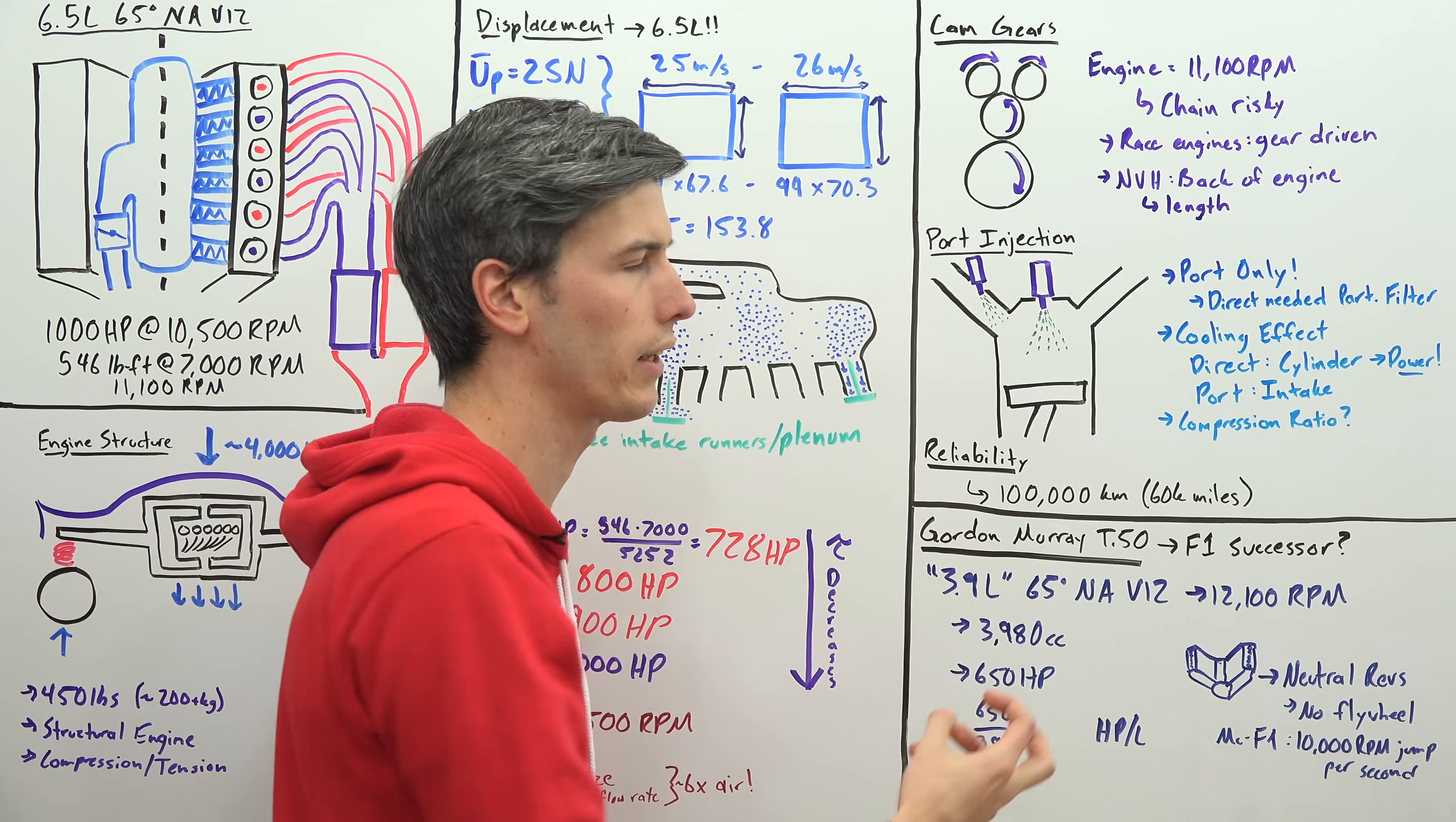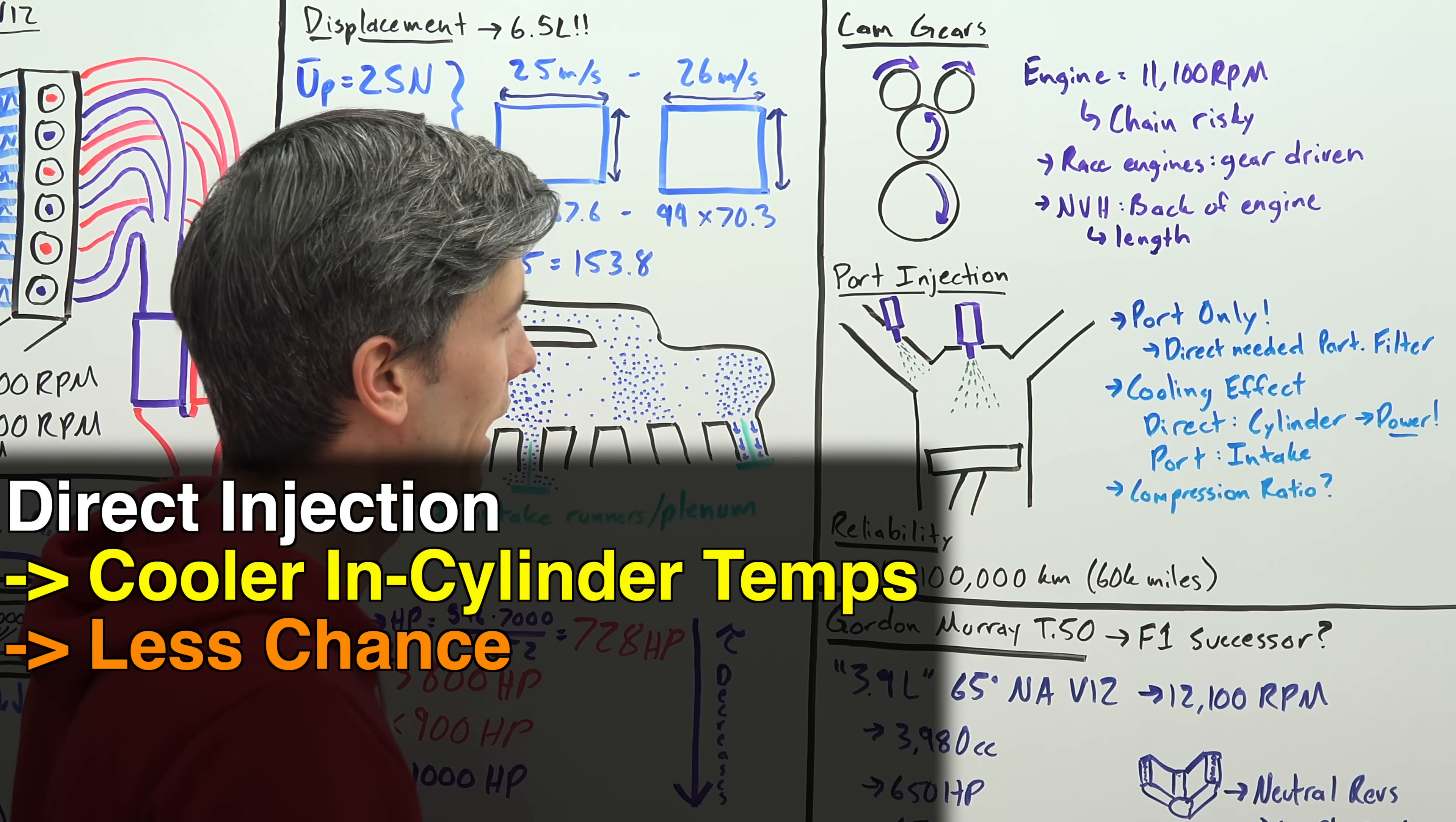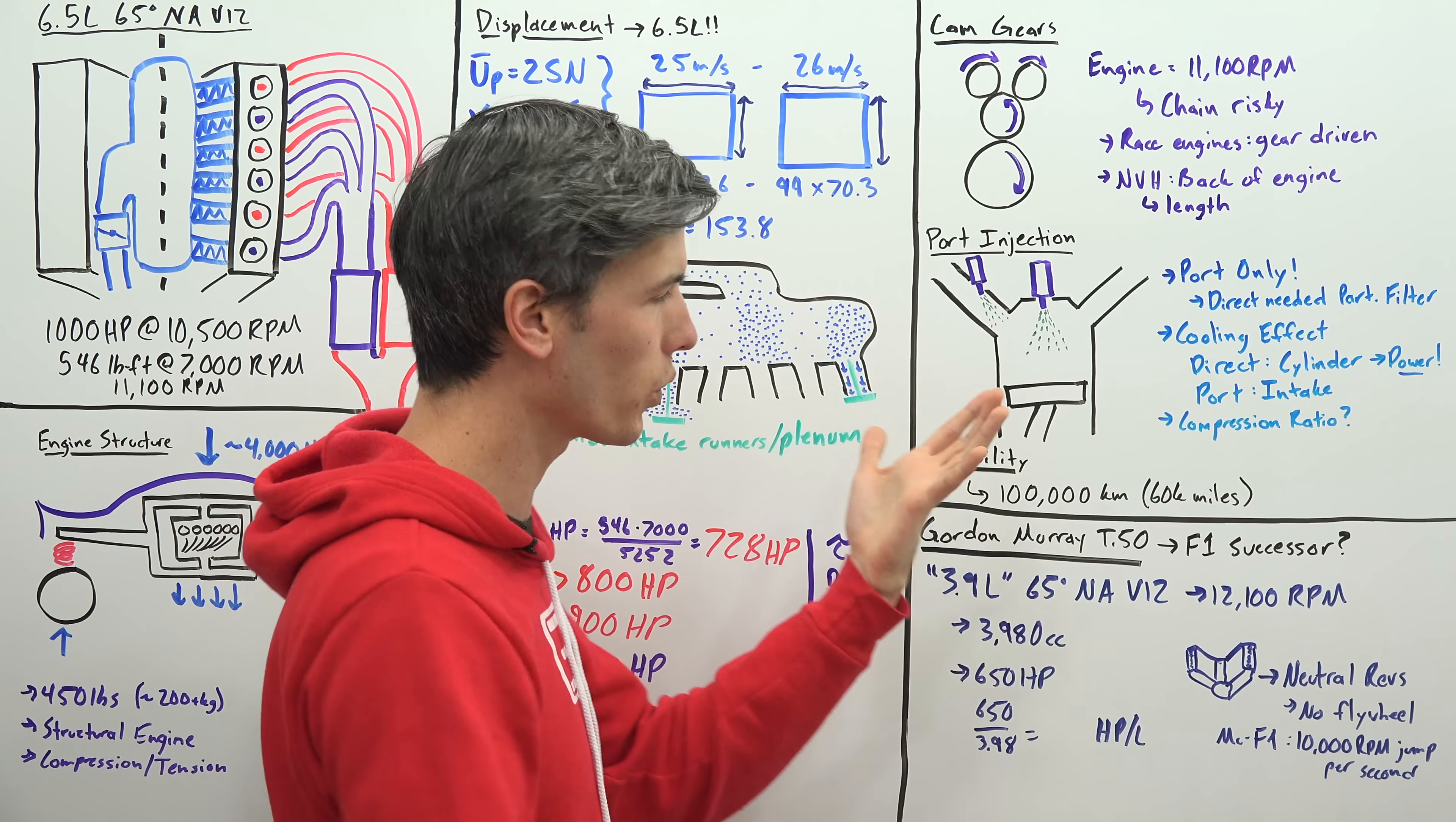And reason being is there's a cooling effect and so when you choose between port and direct you're choosing where you want that cooling effect to happen as that fuel changes from a liquid to a vapor. And so if you have it happen within the cylinder like with direct injection, you cool the temperatures within that cylinder and as a result you're able to reduce overall temperatures and which means you're allowed to use more ignition advance which allows for you to make more power, you don't run into engine knock.